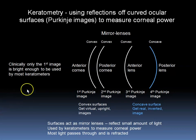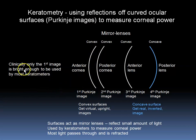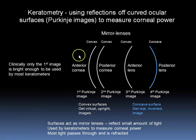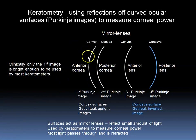Keratometry involves using reflections off the curved ocular surfaces known as Purkinje images to measure corneal power. Clinically, only the first image is bright enough to be used by most keratometers. A curved surface will not only allow light to pass through and refract it, but can also reflect light and change vergence at the same time, acting as a mirror lens, as opposed to a refractive lens. Most of the light at these interfaces passes through, but there is a proportion that is reflected.